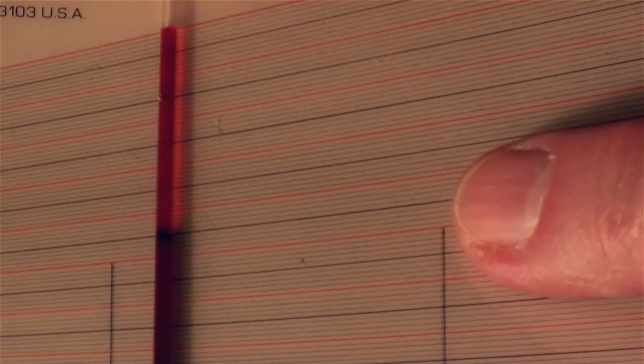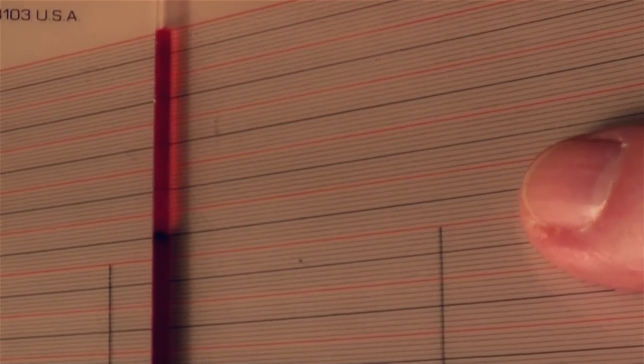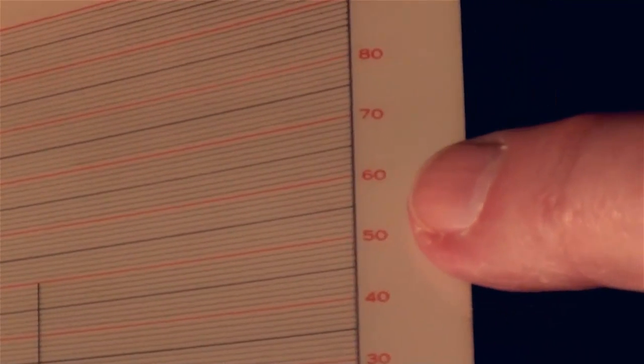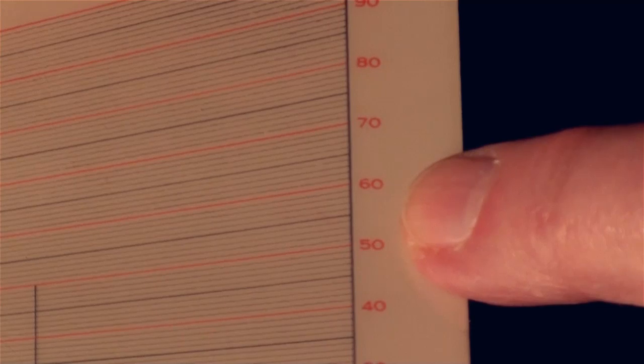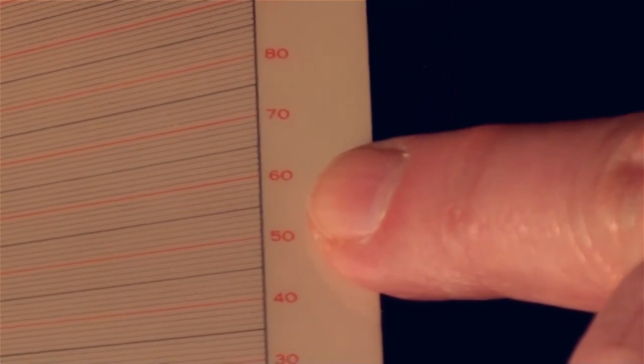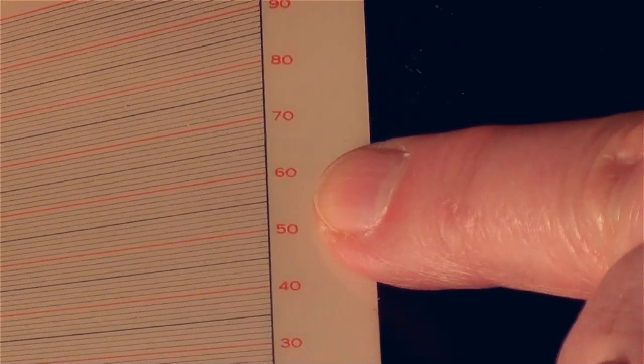If I follow it to the side, what I'm going to do is find a number. In this case, it's 55. So that means this sample of cow blood was 55%. That's the hematocrit reading.